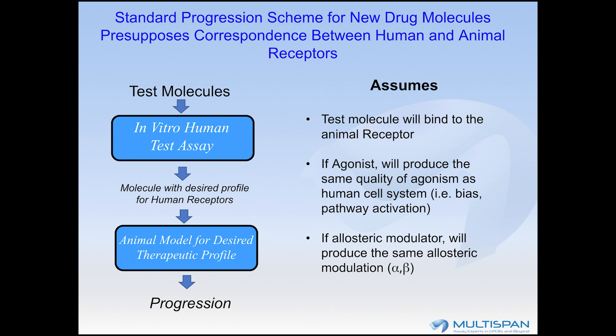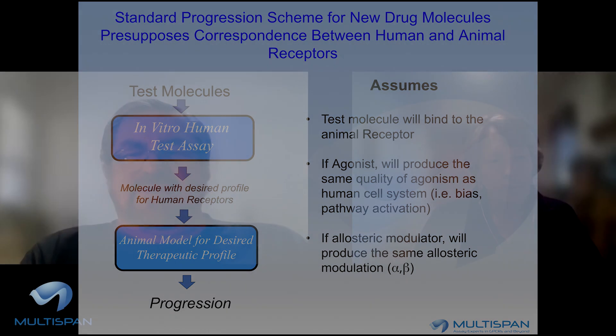It's the sort of ideal world slide, where you have a compound that's active in your human receptor system. And then you move it into your animal model of therapeutic activity, which you must do, unless you could test the compound directly in humans in a therapeutic setting — and there are very rare instances where you can do this. In an ideal world, your compound's active in the human system, it's active in the animal systems, and you're away to the races.